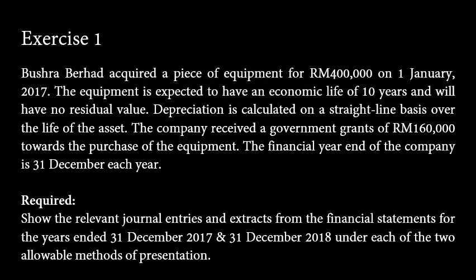This exercise is for you. A company acquired an equipment, and for that it received a government grant of RM160,000 to be used for the purchase of the equipment. You are required to show the relevant journal entries and extracts from the financial statements at the end of financial years 2017 and 2018 using the two allowable methods of presentation. Now pause this video and have a go at this exercise. You may resume watching when you are done.